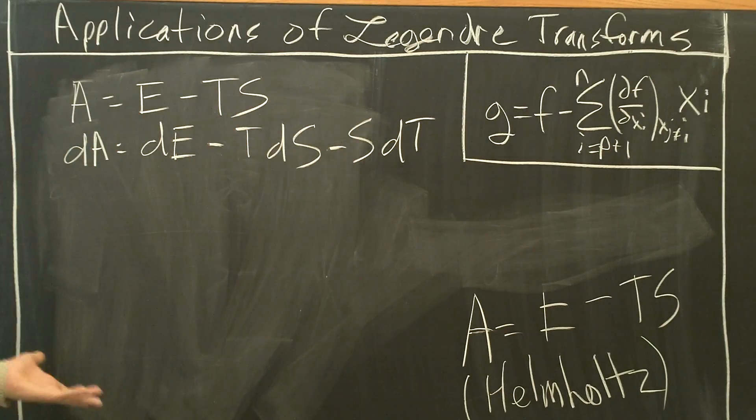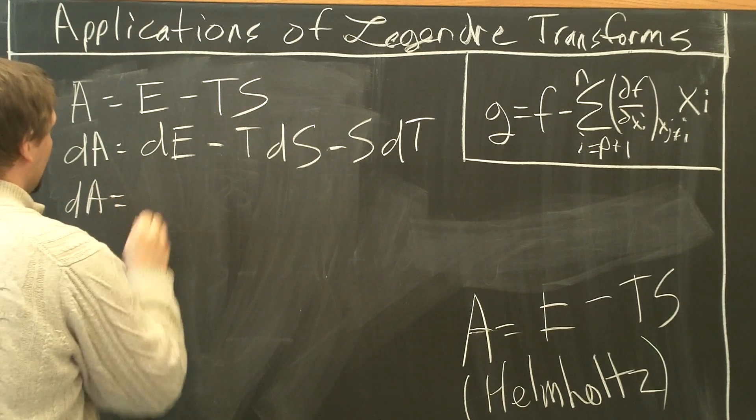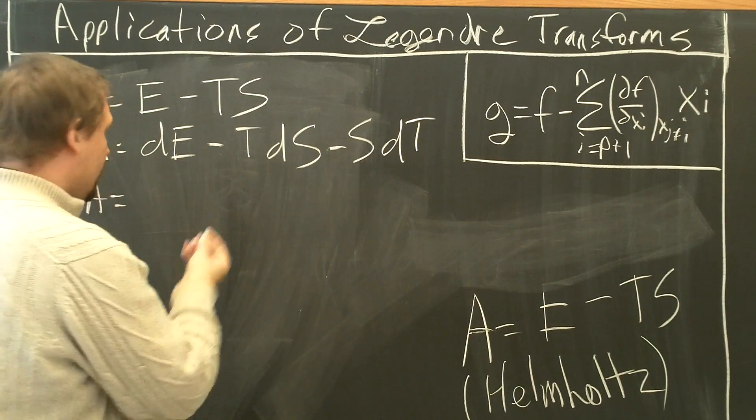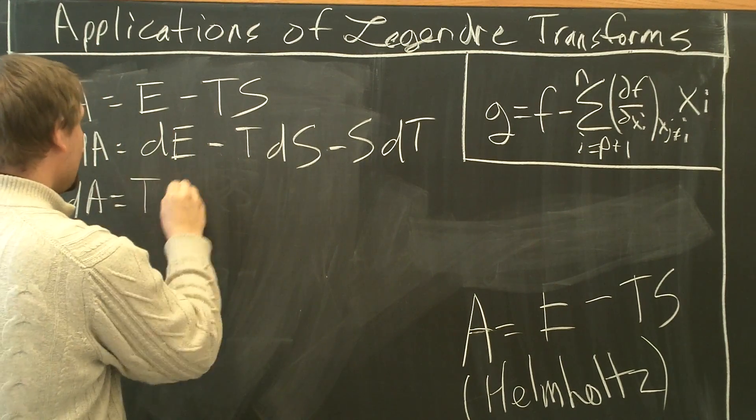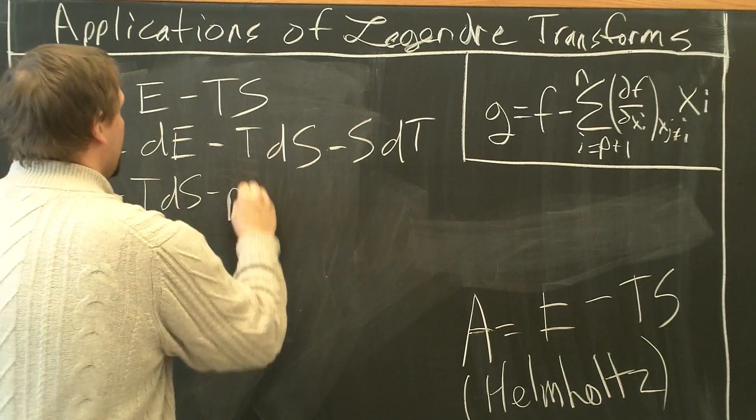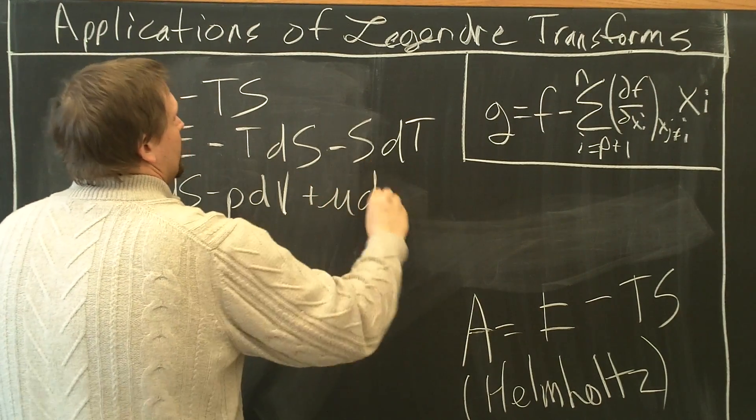So now what you do is substitute in your equations here. And you have dA equals dE, which we just had on the board a second ago, is equal to TdS minus PdV plus μdN. Or μ is the chemical potential. And then,